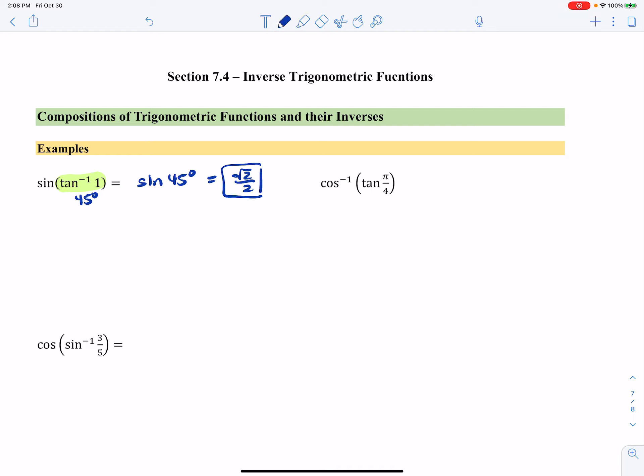Cosine inverse of tangent of pi over 4. And again, inside out, right? Worry about the tangent of pi over 4 first. We know the tangent of pi over 4 is 1. And what angle, when you take the cosine of it, gives you 1? Zero. So there's the first two.